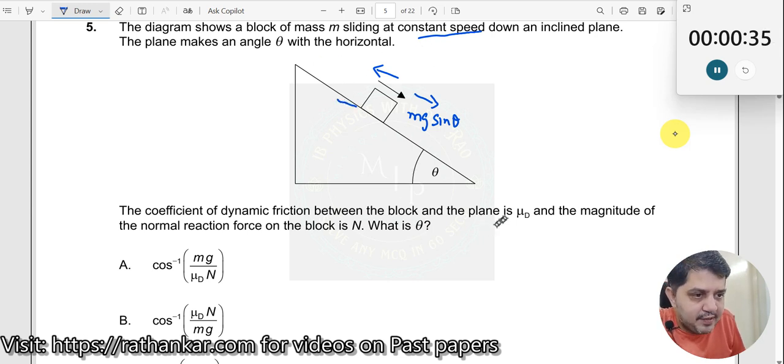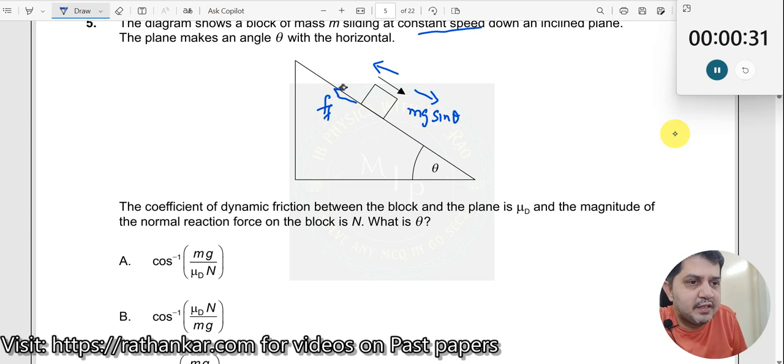It has not told you anything about friction. Ah, maybe it is here. Okay, so there is a friction here. This will be a friction here. And then the coefficient of dynamic friction between the block and the plane is μ_d and the magnitude of the normal force on the block is N. Where is the normal force acting? Normal force is acting here.